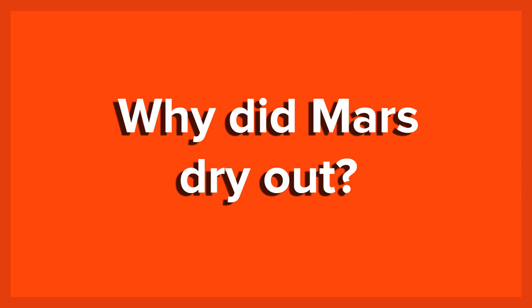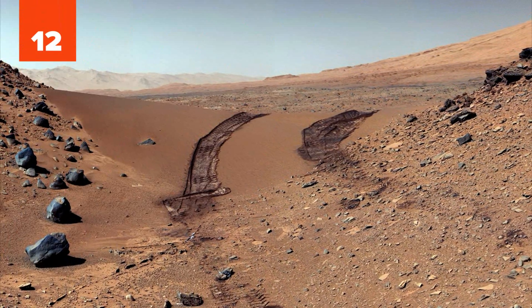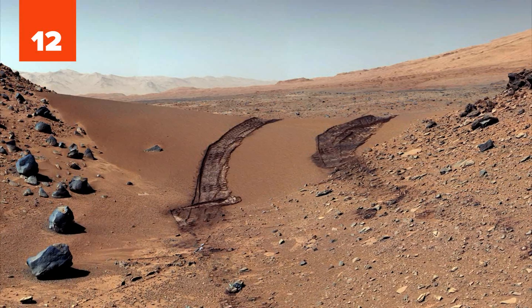Number 12: Why Did Mars Dry Out? We already know from our landers and orbiters that water once flowed in streams and great floods across the now-barren landscape of Mars.